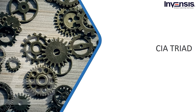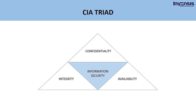Let us now discuss the CIA triad, also called the Confidentiality, Integrity, and Availability triad. The CIA triad is a model designed to provide various companies and organizations guidelines to help them create their security policies. Cybersecurity involves protecting data and information from unauthorized access, deletion, or modification to provide confidentiality, integrity, and availability. We will now discuss these components and some of the information security measures designed to assure each component's safety.